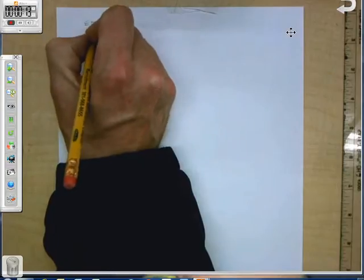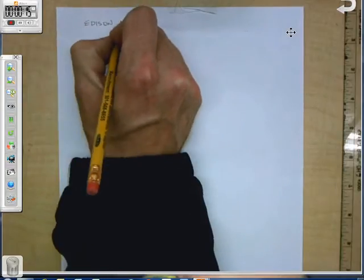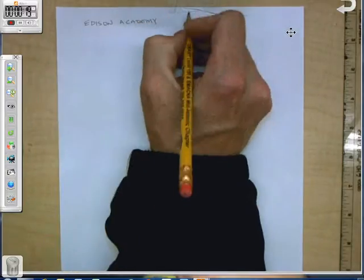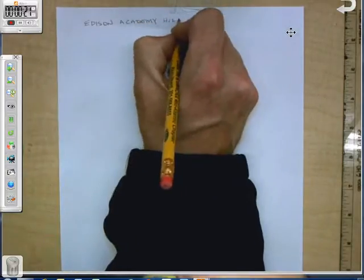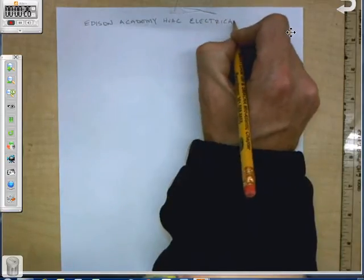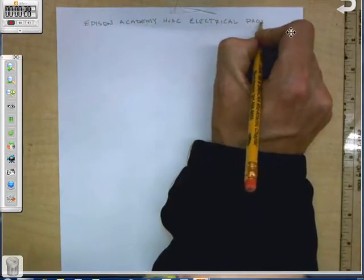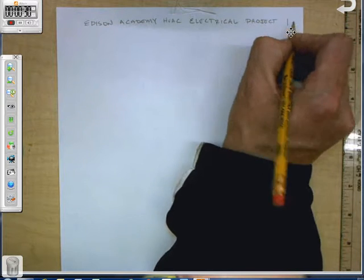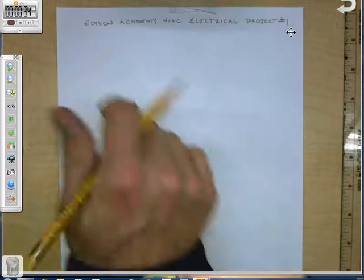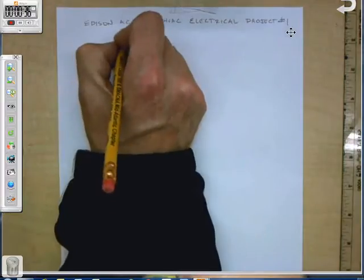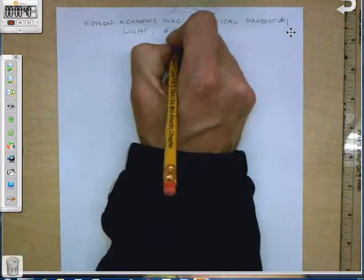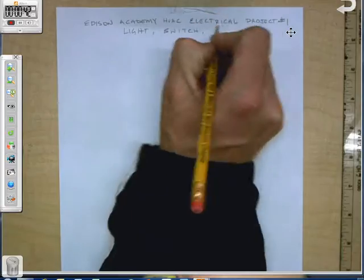So this is going to be the Edison Academy HVAC Electrical Project 1. Alright, now this is also what we refer to as the light switch and receptacle project.